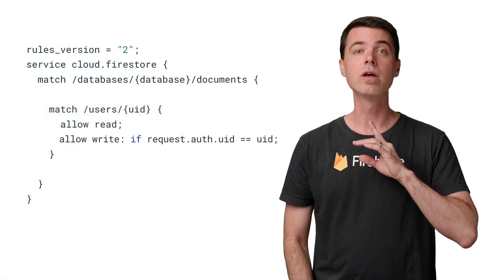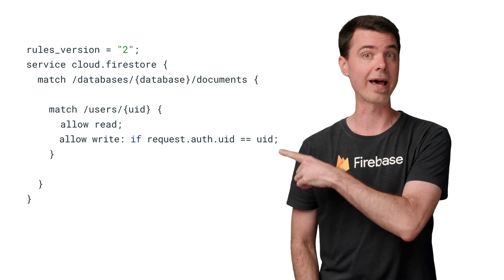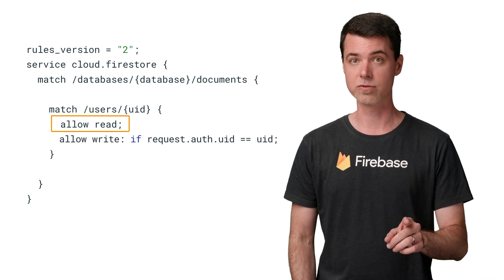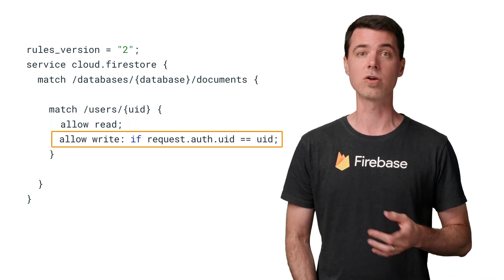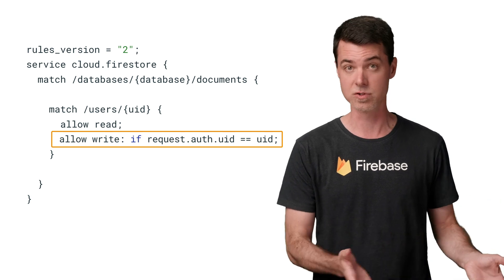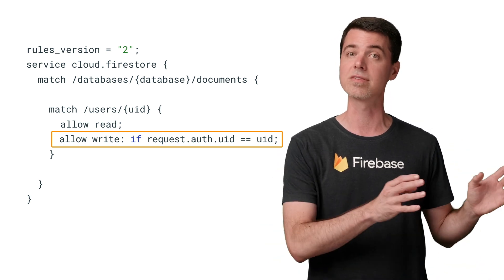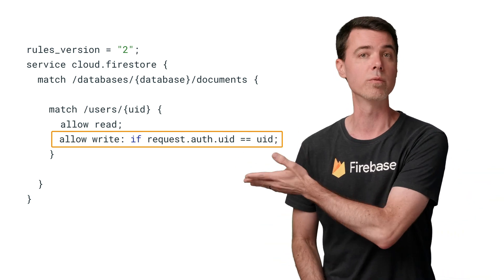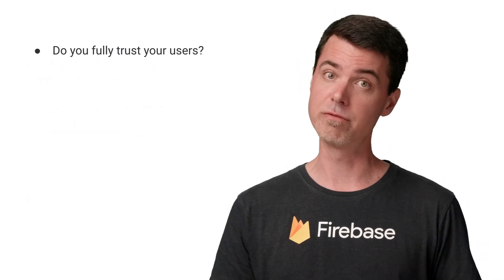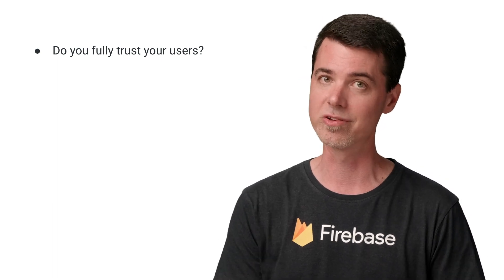In a previous video, you saw rules that look like this that allow read access to everyone, to all documents in a collection called users. This rule also limits the write access to only authenticated users whose UID matches the document's ID. So if the user's UID matches the document ID, they can do whatever they want with this document. But do you really want to let your users do anything with this document? There's always a chance some malicious user might try to cause problems for your app by making changes that break the assumptions of your app.